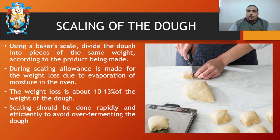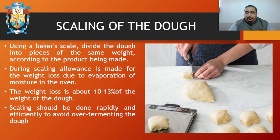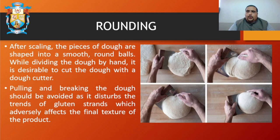Next is scaling of the dough. You weigh the dough equally, divide it, and make sure that every piece has an equal amount of dough. The reason is that when it bakes, if one piece has 100 grams and another has 200 grams, they will not bake properly in the oven, causing uneven baked bread.